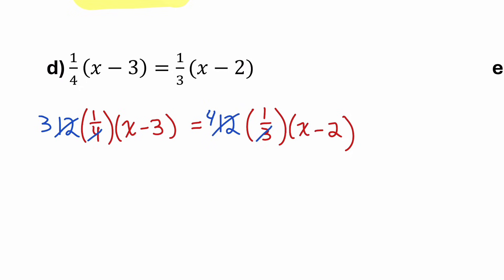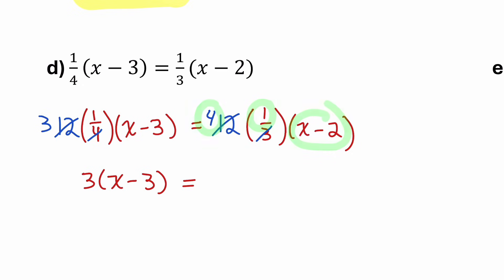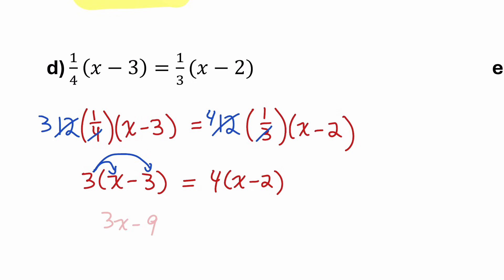So on the left, I have 3 times 1 times x minus 3, so that's just 3 times x minus 3. And on the right side, I have 4 times 1 times x minus 2, so that's just 4 times x minus 2. I'll expand both sides of the equation: 3x minus 9 equals 4x minus 8.